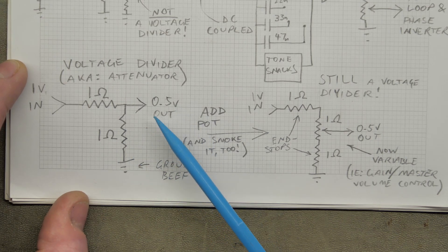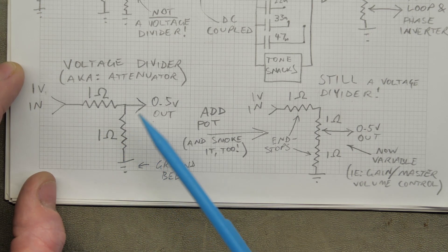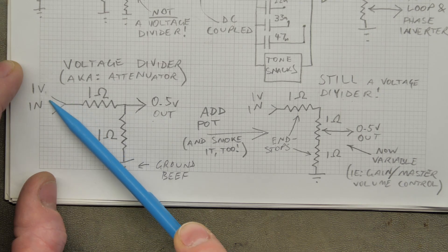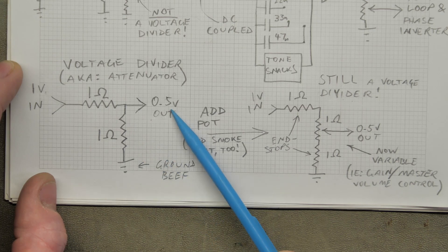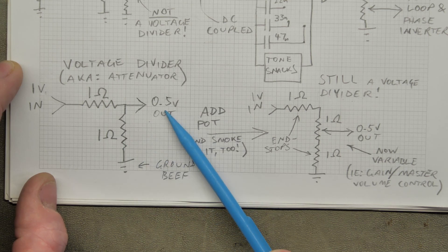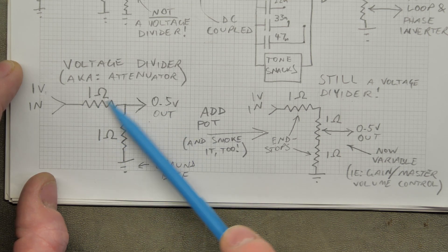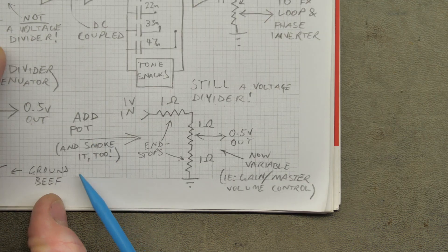So I want to talk about attenuators. They're just voltage dividers. Here's a super simplified one with very simple values so you can figure it out in your brain. One volt in, let's just say peak to peak, whatever. One ohm there, one ohm there, you'll get half a volt out. If that's 10 ohm there, 10 ohm there, you'll get half a volt out. If that's a million ohms there, a million ohms there, you'll get half a volt out. If those values are equal, it divides the voltage by two. It halves it. Add pot and smoke it too.